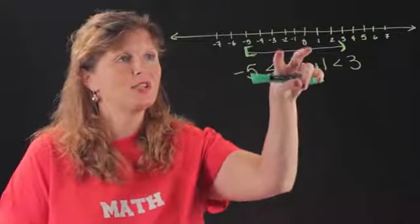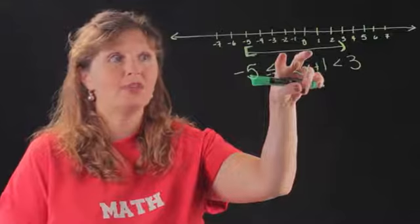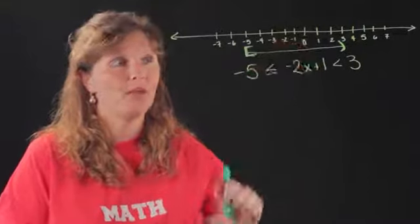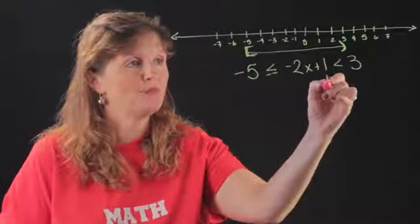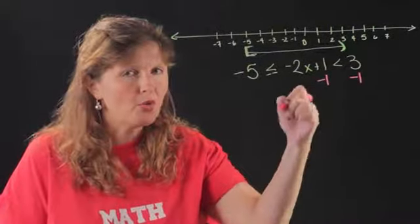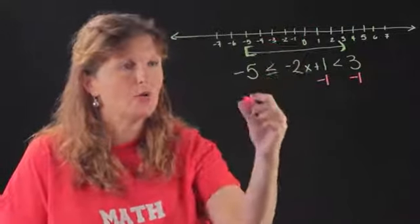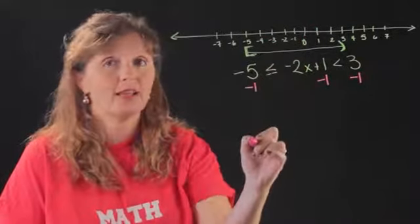So negative 2x plus 1 is in this range and then I'm going to start moving along the number line. So the next thing I'm going to do is subtract 1. But I have to subtract it from both sides because there's really two inequalities here.